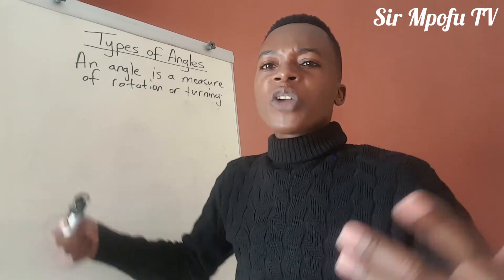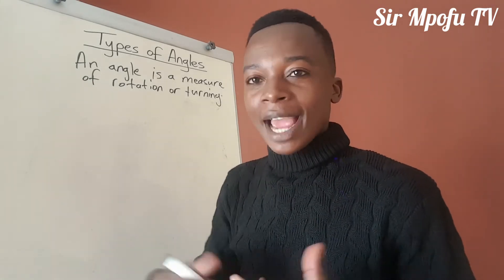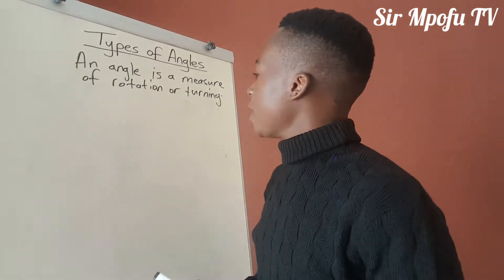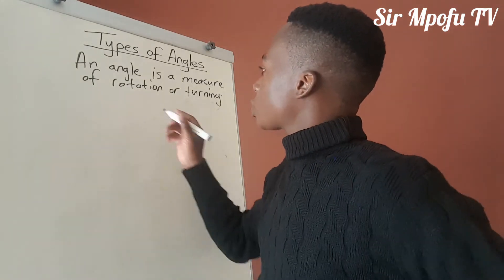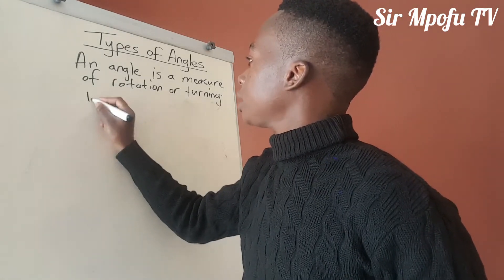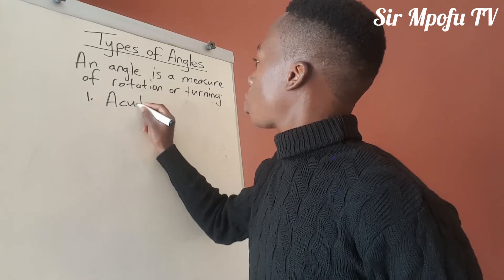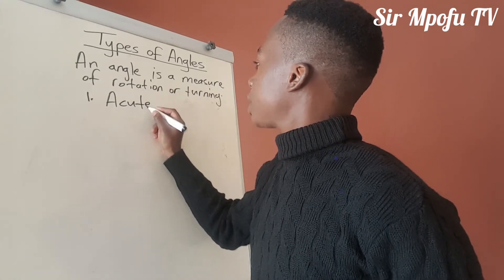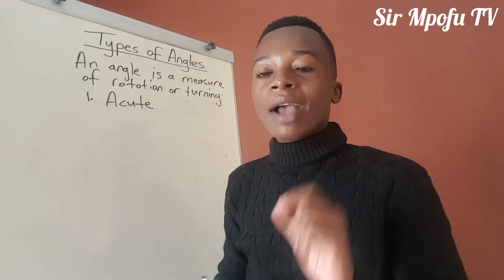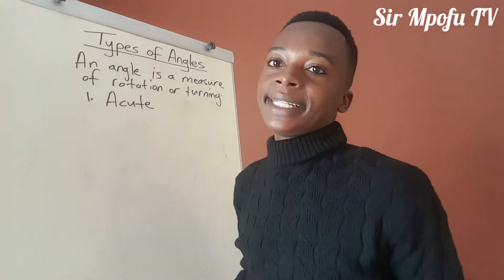There are about five main types of angles that I want you to know that are very crucial and important to you. The first one is called an acute angle. So what is an acute angle and how does it look like? An acute angle is an angle that will be less than 90 degrees.